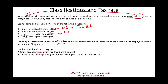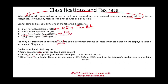Long-term capital gains can be subject to five different rates depending on the asset type. Collectibles may be subject to the 28% rate. Section 1250 unrecaptured gain may be subject to 25%. Other long-term capital gains may be subject to 0%, 15%, or 20% depending on your tax filing status and taxable income. This breakdown will be covered in much greater depth in the property transaction sessions.